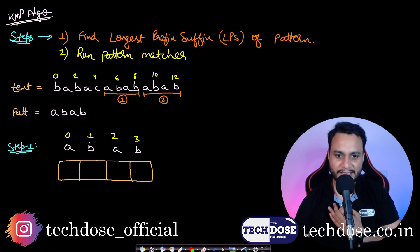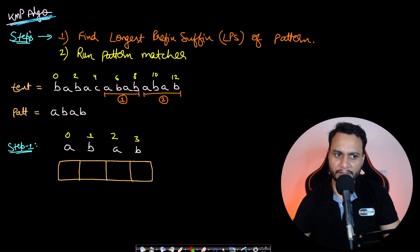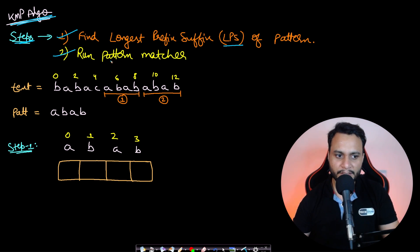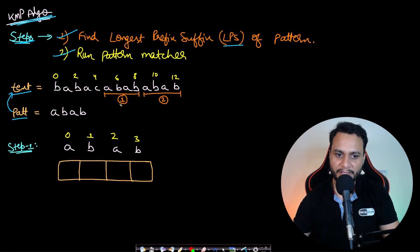Now let's directly apply the KMP algorithm — I have already covered this in detail in another video. In the KMP algorithm there are two steps: first, find the longest prefix which is also a suffix, known as the LPS; second, use the LPS array to run the pattern matcher. The pattern is the needle and the text is the haystack. There are two matches but we are interested in match one, which starts at index 5.